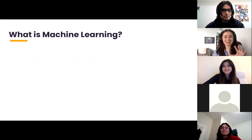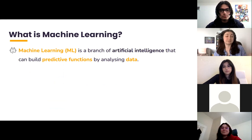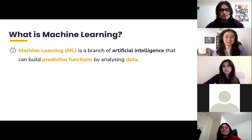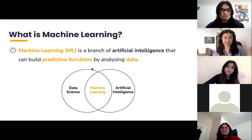Now let's try to answer: what is machine learning? Machine learning, or ML, is a branch of artificial intelligence that can build predictive functions by analyzing data. ML uses mathematical and programming tools to find patterns in data and build mathematical functions that help us predict something. We call these functions predictive functions, or more simply, models. There's no need to explicitly code or derive these functions — the machine learning algorithm learns the function on its own, which is why it's called machine learning. As you can see in this chart, machine learning falls at the intersection of artificial intelligence and data science.